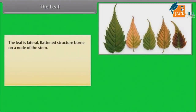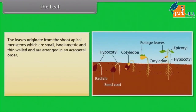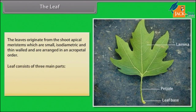The leaf is a lateral, flattened structure borne on a node of the stem. The leaves are the food manufacturing organs of the plant. It bears a bud in its axil. The axillary bud later develops into a branch. The leaves originate from the shoot apical meristems, which are small, isodiametric and thin-walled, and are arranged in an acropetal order.